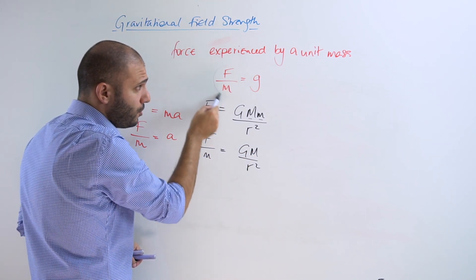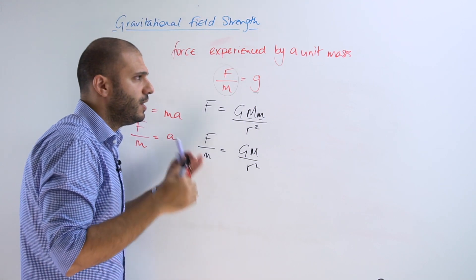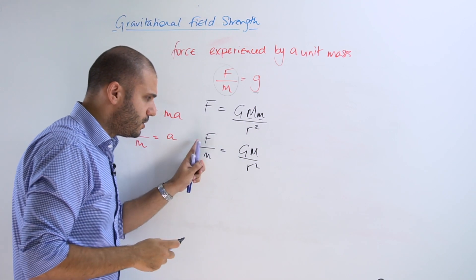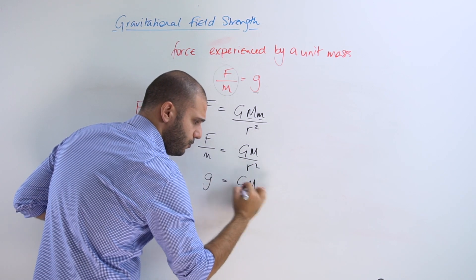Now we already know that F/m is going to give us the gravitational field strength or rather the acceleration due to gravity. So that means we do now have an equation for the acceleration due to gravity which is given by GM over r squared.